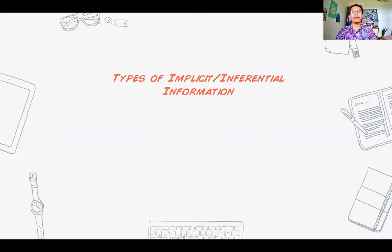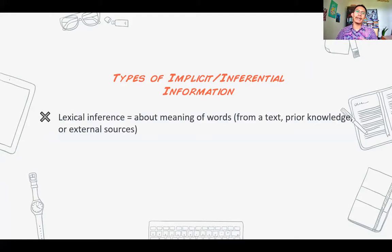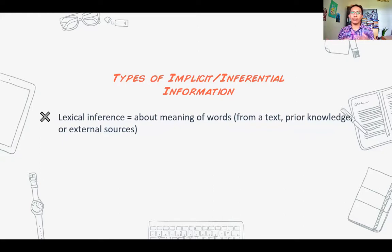Now we are going to go deeper into implicit or inferential information. There are three types of inferential information, which I borrow from Israel Chikalanga. The first is the lexical inference — information about the meaning of a word. You can get the meaning by looking at the context, reading the entire text, finding a definition, using a dictionary, or your prior knowledge. The purpose is to avoid ambiguity and get clarity.